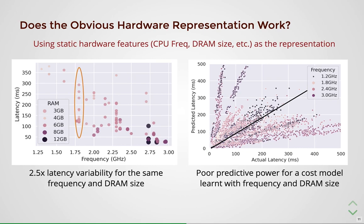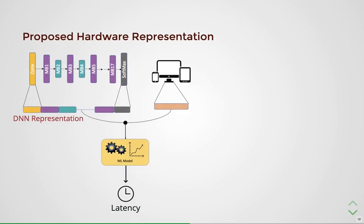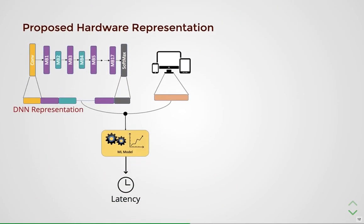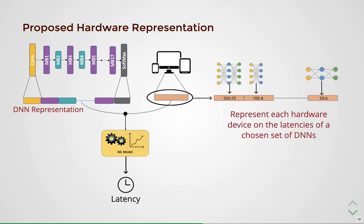However, such features are not readily available across a wide range of devices to an ML practitioner or an app developer. Instead, is there a simpler approach? In this work, we propose a simpler and elegant approach: we discovered that a hardware device can be uniquely represented by its latencies on a carefully chosen set of networks. We call this the signature set, since it serves as a unique fingerprint for a given hardware device. This representation is simple and easily accessible — ML practitioners simply need to characterize any hardware on the signature set of DNNs and use this representation to estimate latencies on a wide range of DNNs using the cost model.